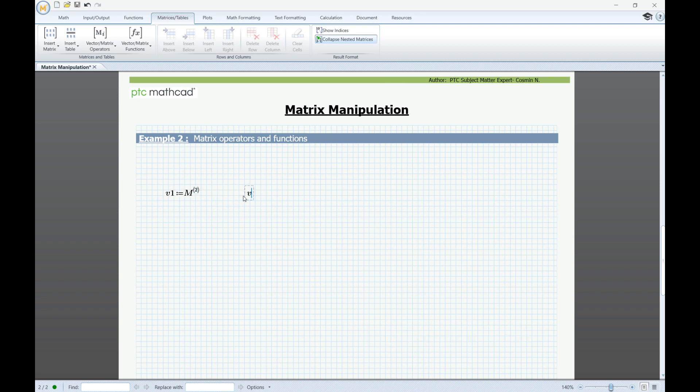In a similar way, I'm going to create another variable called v2, and this time I'm going to use the row operator, Ctrl-Shift-R, to extract a row from the matrix. We can now evaluate the variables to display the results.